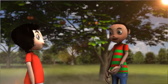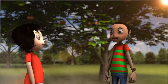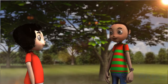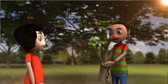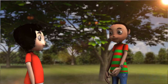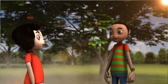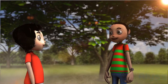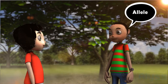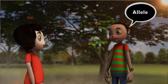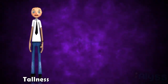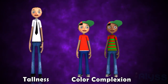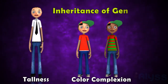The trait or characteristic of an offspring is determined by the genes present in parents. The alternative forms of genes are called alleles. Therefore, tallness, color complexion, etc. occur due to the inheritance of genes.